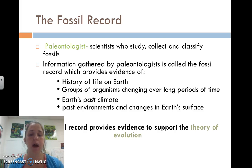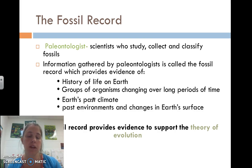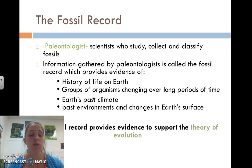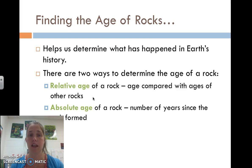The fossil record also allows us to look at past environments and changes in the Earth's surface — when it was really green because there would be a lot of leaves fossilized, or covered in ocean because there would be a lot more shells and marine-type animals. This really supports our theory of evolution. We're going to review a little bit of what we talked about regarding radioactive dating, but first we're going to look at finding the age of rocks.